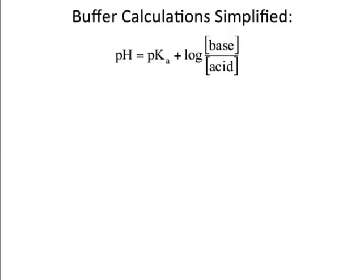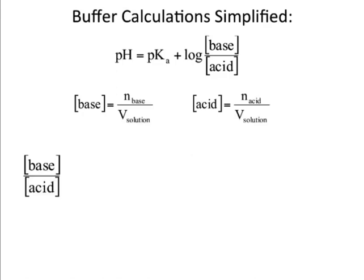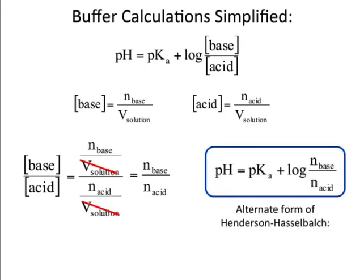Another useful thing about the Henderson-Hasselbalch equation, aside from saving you time, is that you can do this. So here's the equation. Different font, but whatever. Base over acid. And the concentration of base is moles over liters. Concentration of acid is moles over liters. So when you put these together, base over acid, here's moles over liters, moles over liters. The moles will be different, but since these are present in the same solution, that means the volumes are the same and we can cancel this out. And then we have an alternate form of this equation with just moles in it. So this may be useful to you.